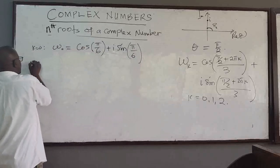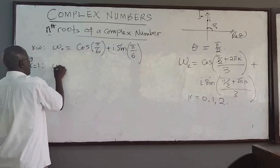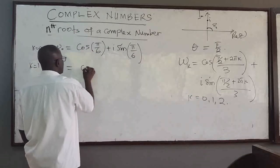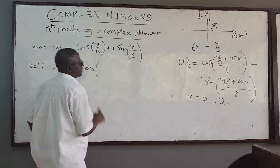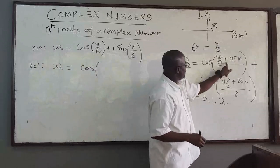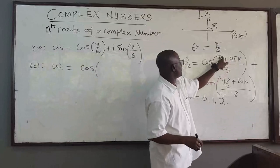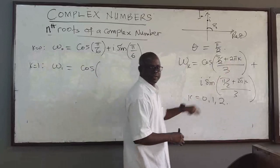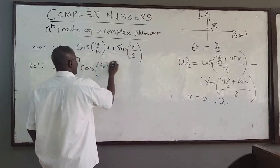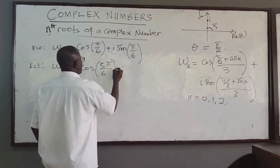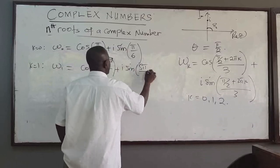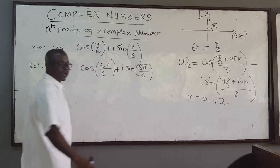When k equals 1, the second root w1 equals cosine of (pi over 2 plus 2 pi) over 3. That gives (pi plus 4 pi) over 6, which is 5 pi over 6. So w1 equals cosine of 5 pi over 6 plus i sine of 5 pi over 6.